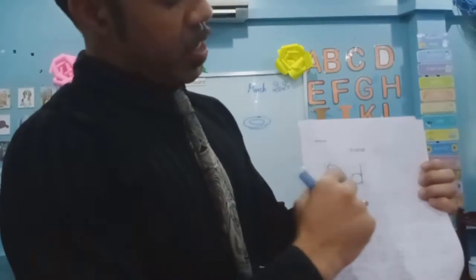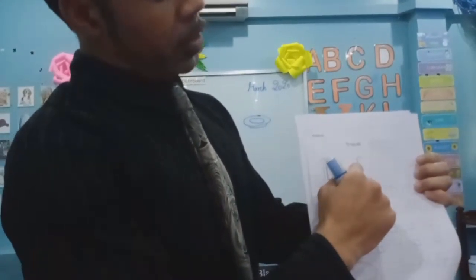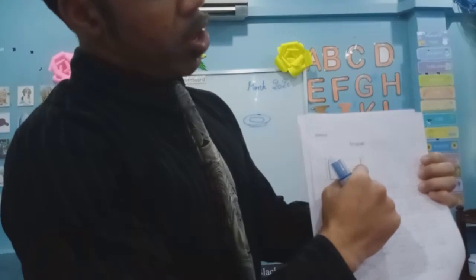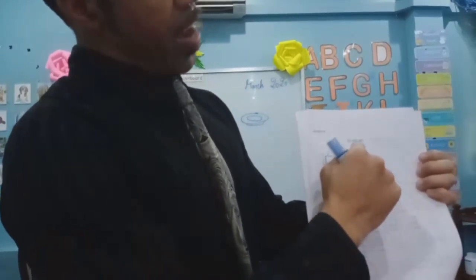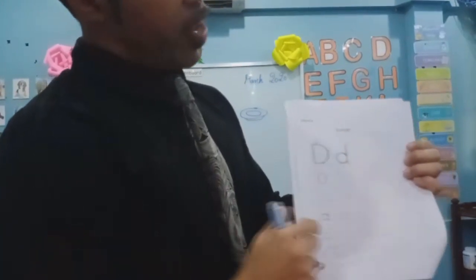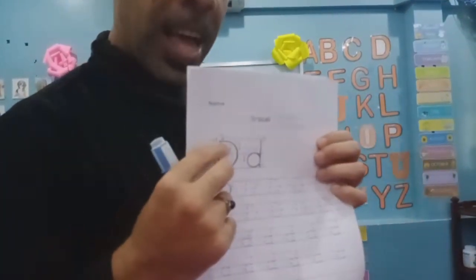Big D, we start from the middle. Big D, we go around in a circle and then up and down. Just like the worksheet says.